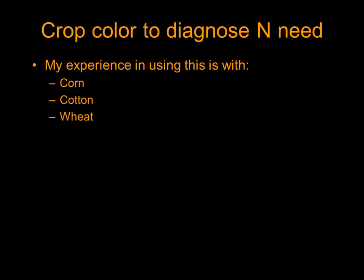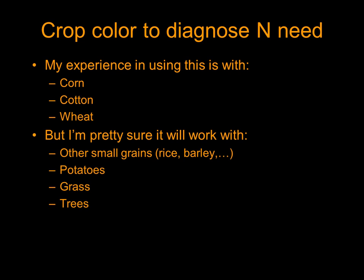My experience is with corn, cotton, and wheat, and I feel it's pretty good with all of those. I've got lots of experience with corn, a moderate amount with cotton, and less with wheat, but we're still working on that. I'm pretty sure it would work with other small grains like rice and barley, potatoes, and I suspect grass and trees would work just fine too. It's all the same physiology — when the crop, whatever it is, doesn't have enough nitrogen, it shows up as a lighter green or yellow color.